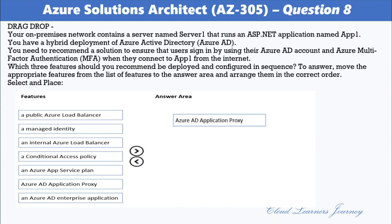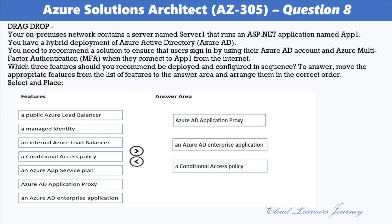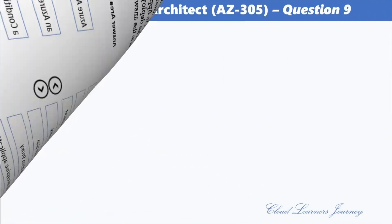The three correct features in order are: Azure AD Application Proxy, an Azure AD Enterprise Application, and a Conditional Access Policy. Start by enabling communications to Azure data centers to prepare the environment for Azure AD Application Proxy, then add the on-premises app to Azure AD. Once your environment is prepared and the connector is installed, add on-premises applications to Azure AD by signing in as an administrator in the Azure portal, selecting Azure Active Directory, then Enterprise Applications, and then New Application.